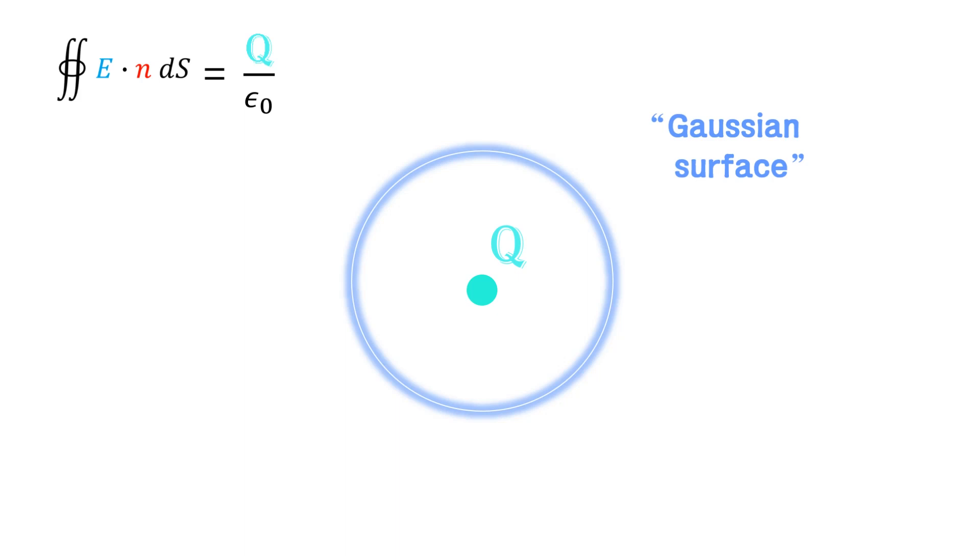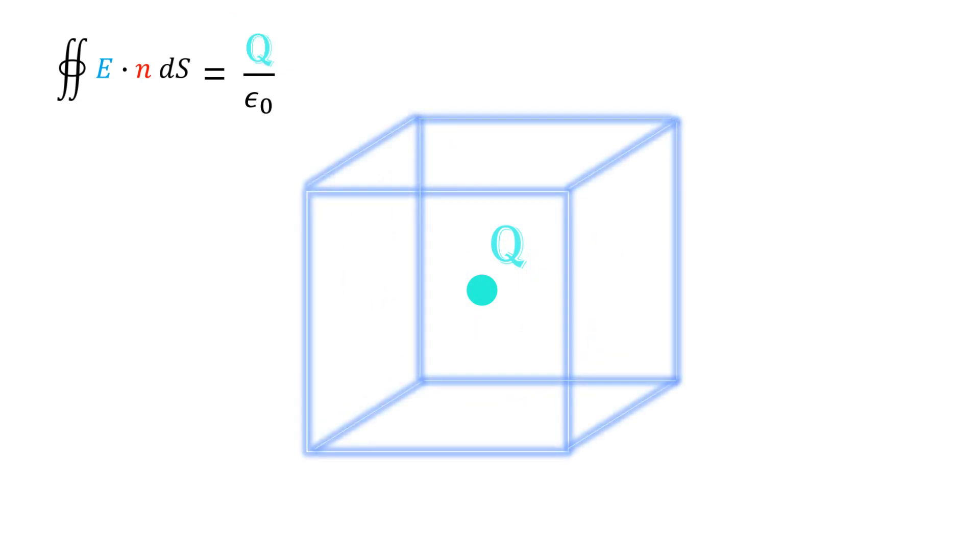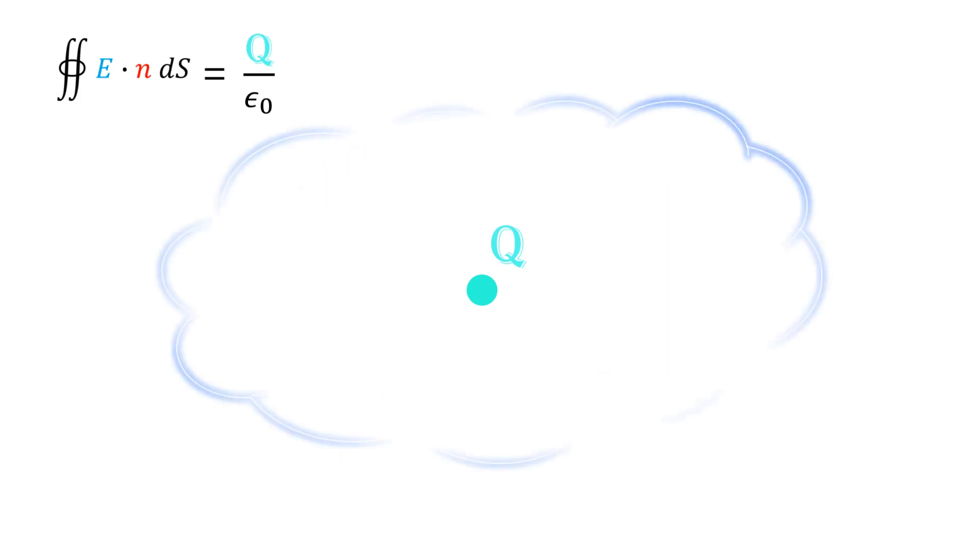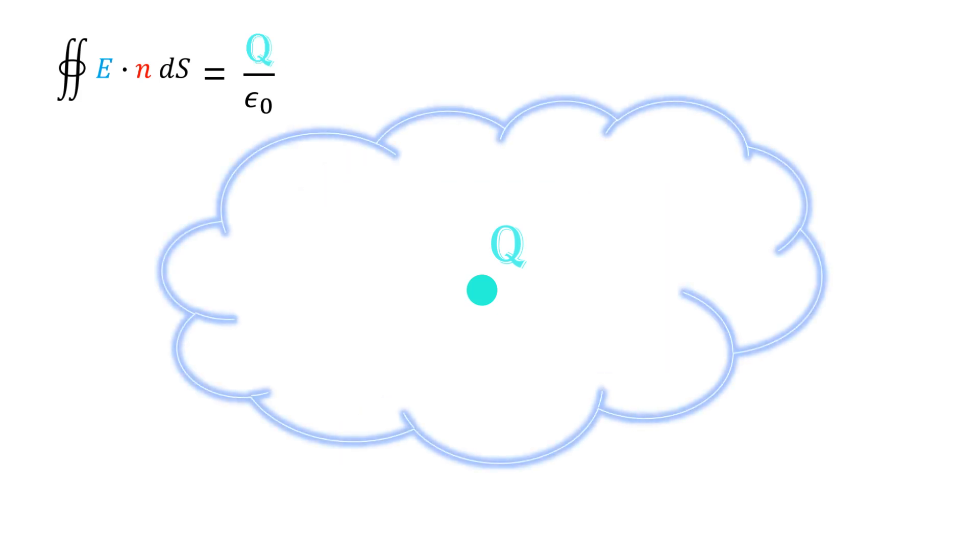For another example, a cube. It is okay. And another example, a cloud that doesn't have any holes.